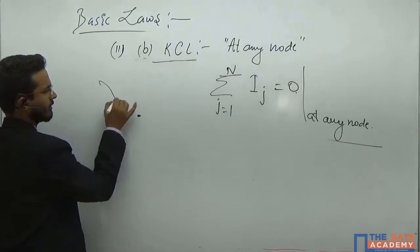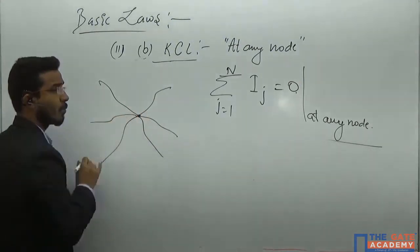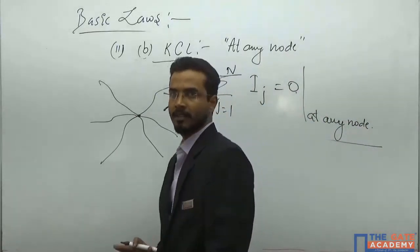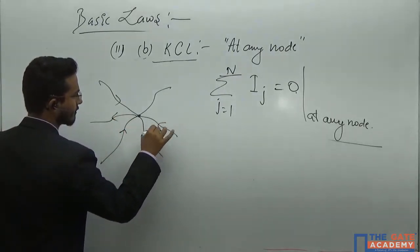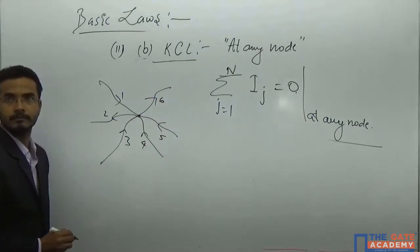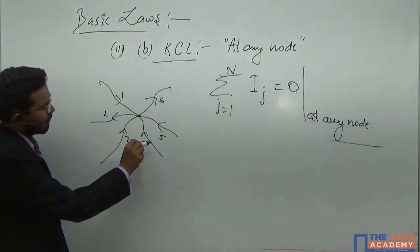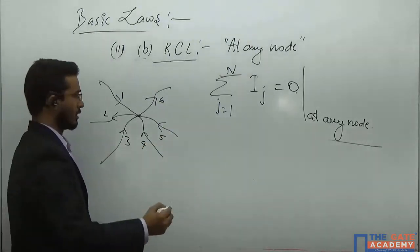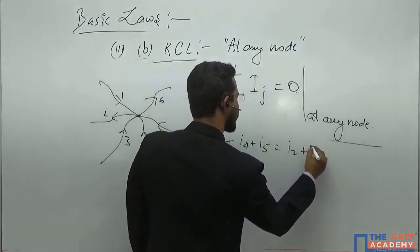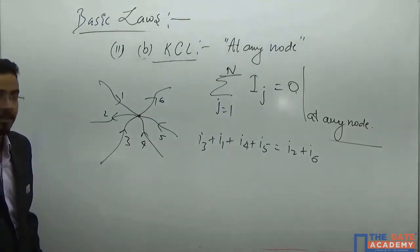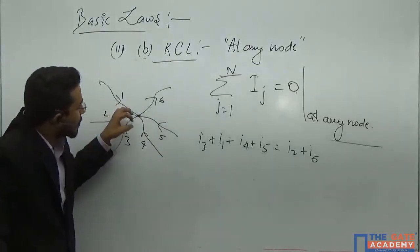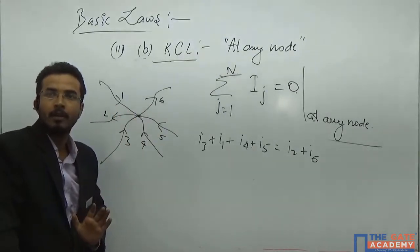What is a node? The point where at least three branches are meeting, meaning current must get divided. If at a node currents i1, i3, i4, i5 are entering and i2, i6 are leaving, then i1 + i3 + i4 + i5 equals i2 + i6. Whatever current is reaching towards the node must have to leave — the same amount of charge you are providing here is going from here.